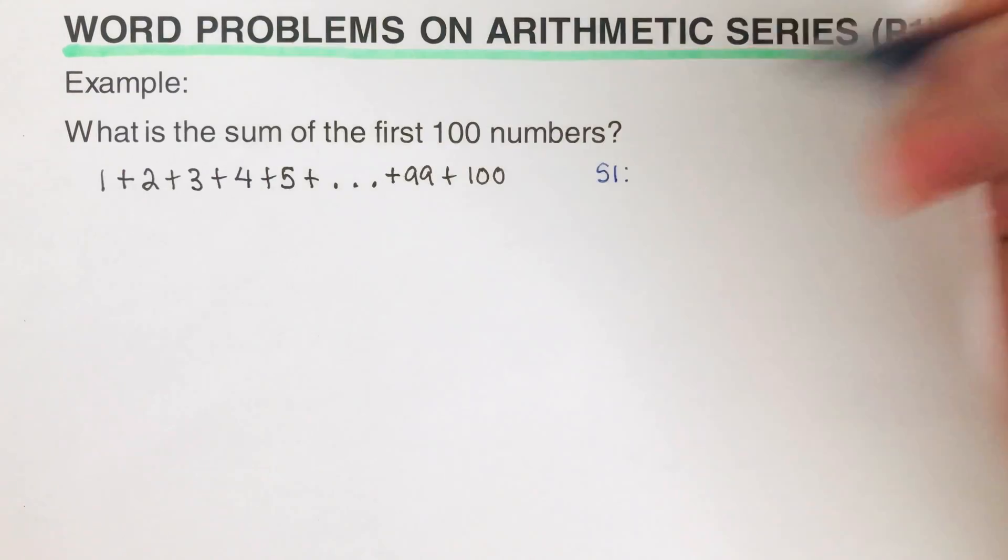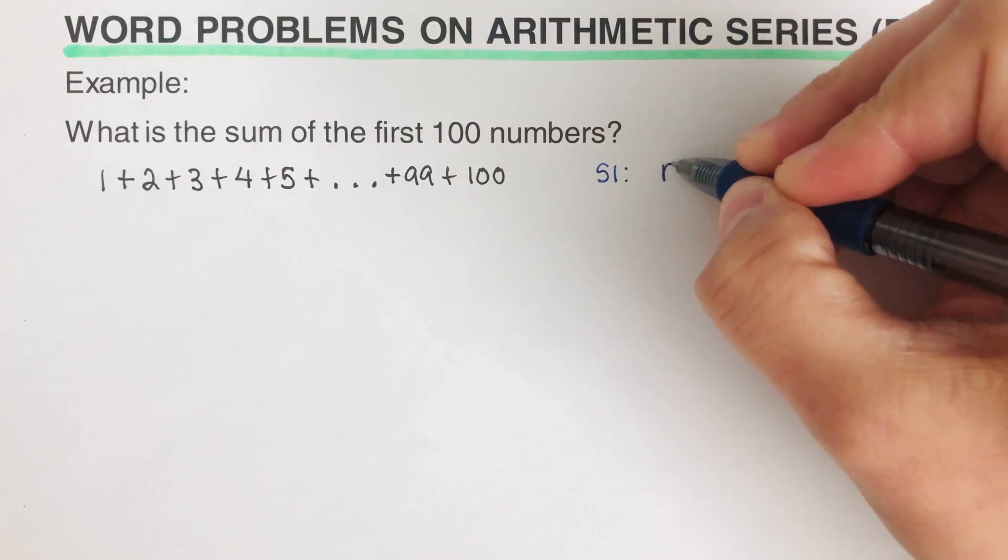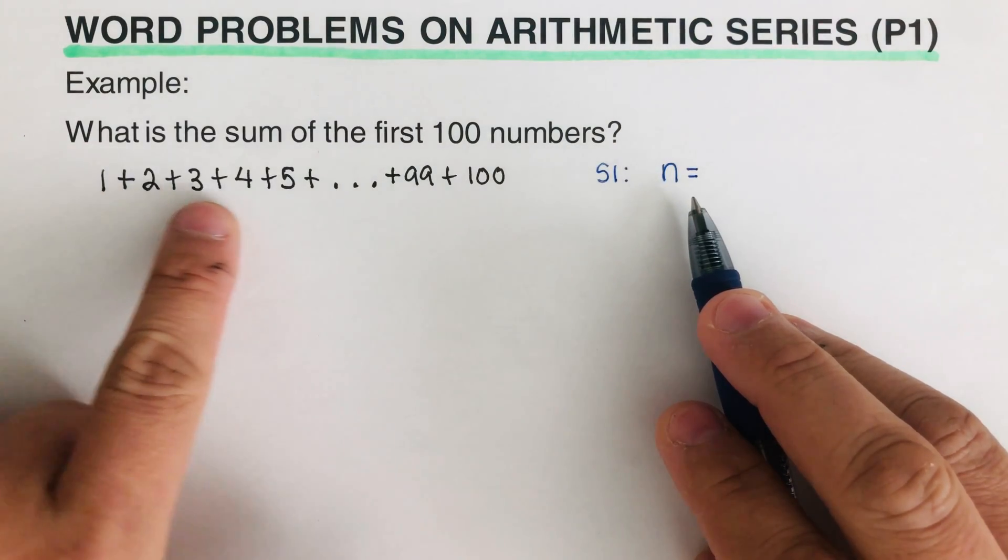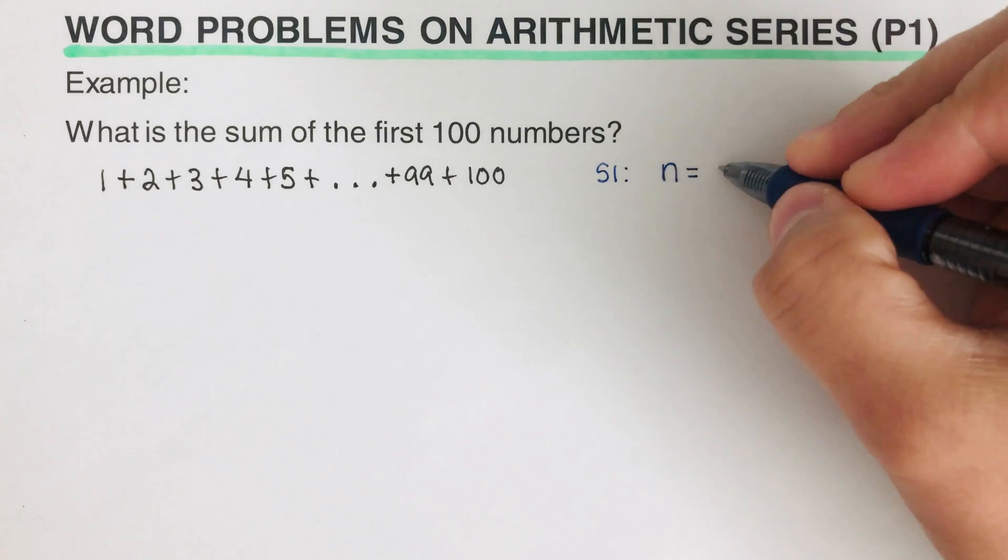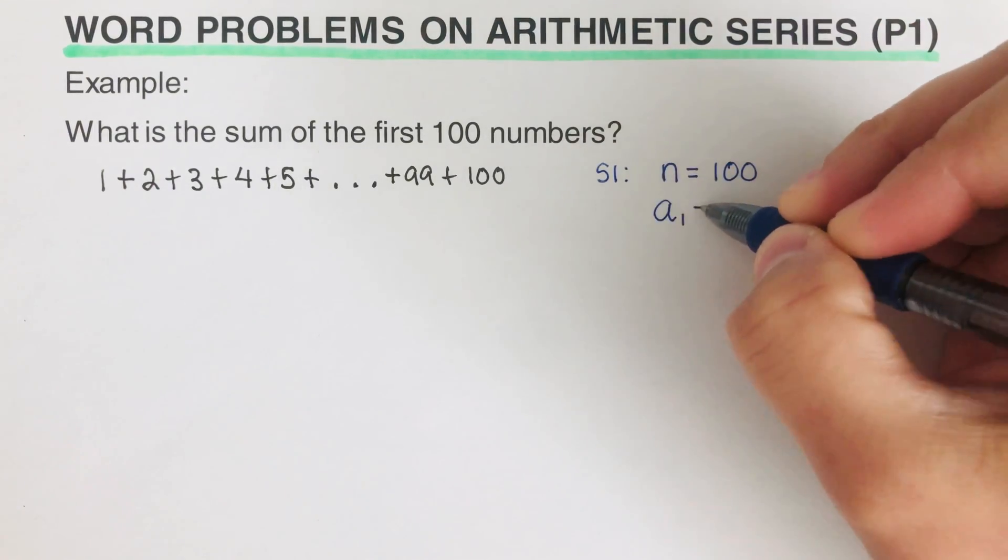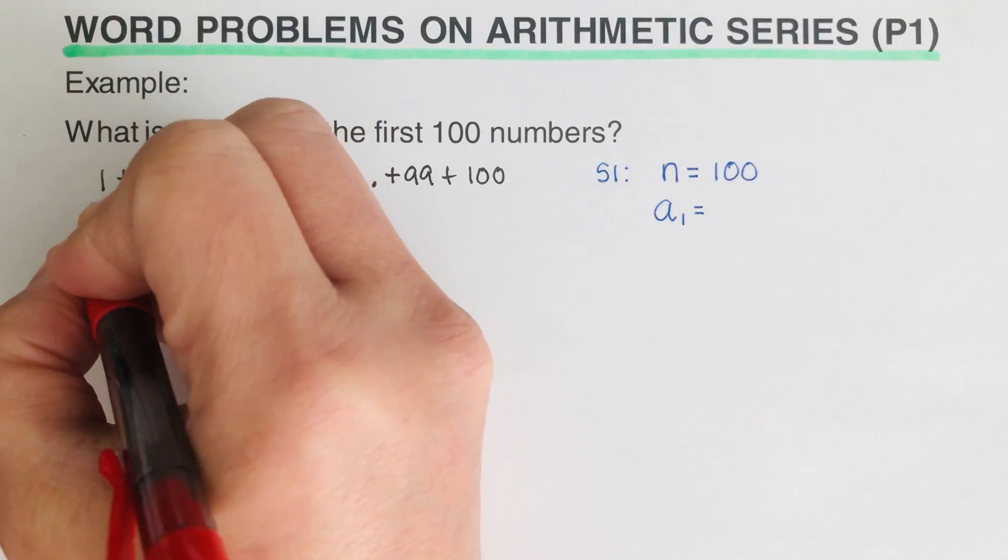So for step one, all we need to do again is the n. n represents the number of terms, so in this problem here we can say that there are 100 terms, so our n is 100. And then the next one is our a₁. a₁ represents the first term, so our first term here is 1, so this is our a₁.